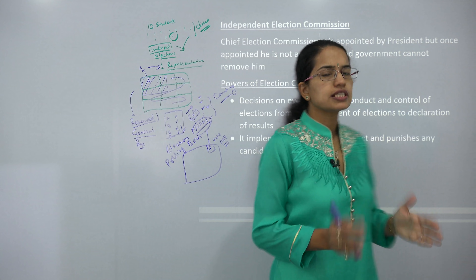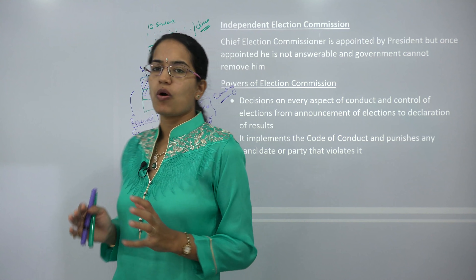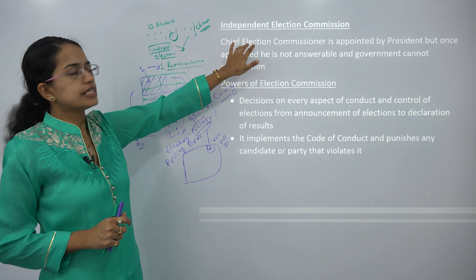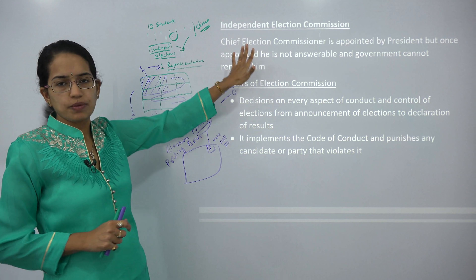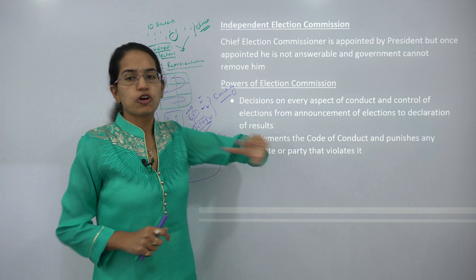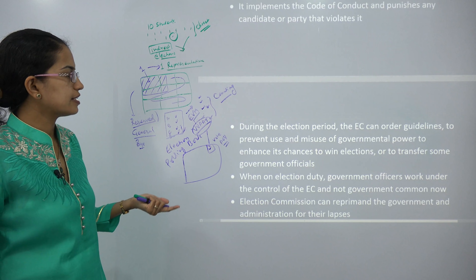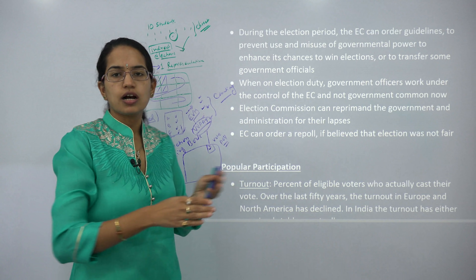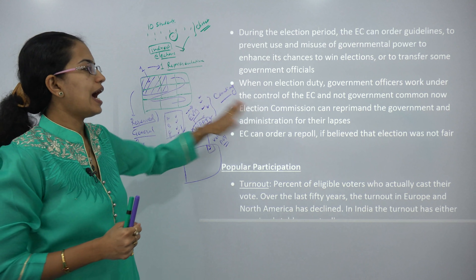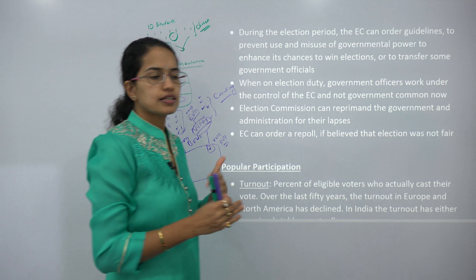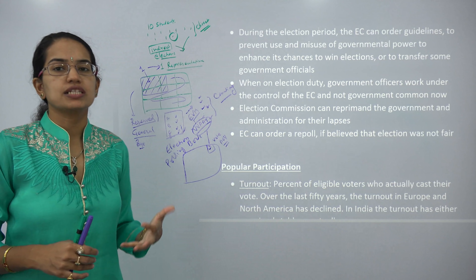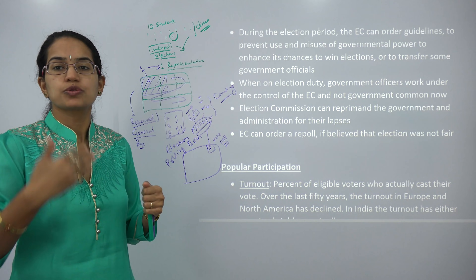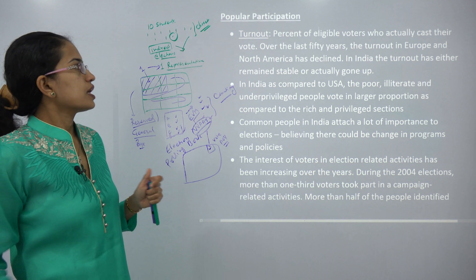The Election Commission is an independent body that conducts elections and is not answerable to the government. No one can remove the Chief Election Commissioner — the government does not have that power. The Election Commission makes decisions on every aspect of the conduct and control of elections, implements the code of conduct, and ensures government officials on election duty remain unbiased. If malpractices are found at a particular polling booth, the Election Commission can order repolling at that seat.